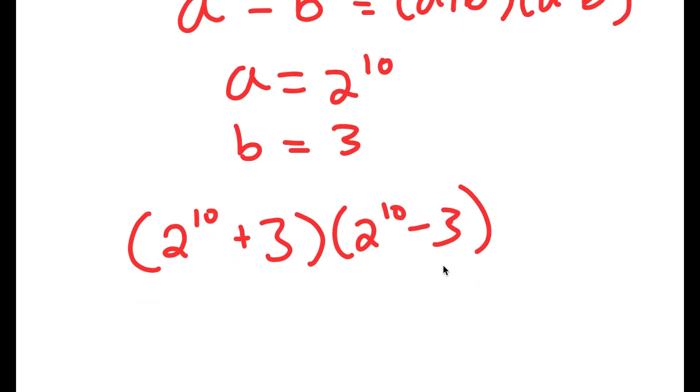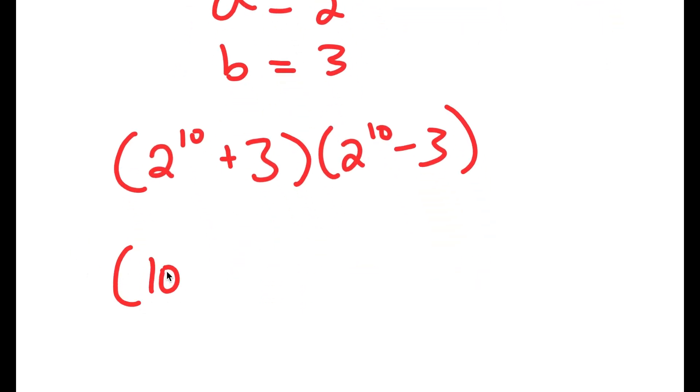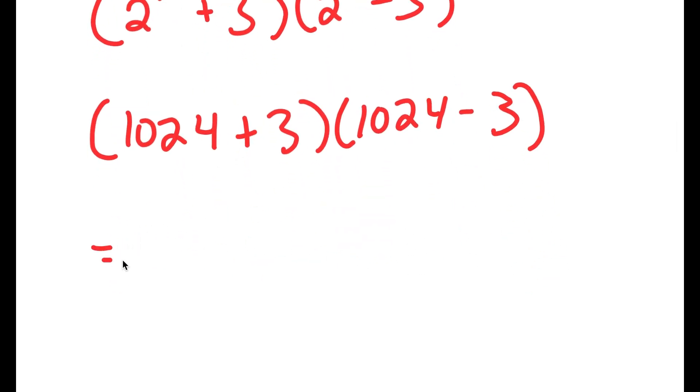Now, 2 to the power of 10 is equal to 1024. So I get 1024 plus 3 times 1024 minus 3. And this is equal to 1027 times 1021.